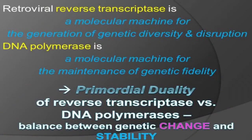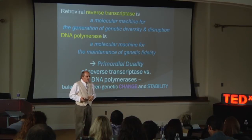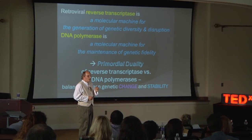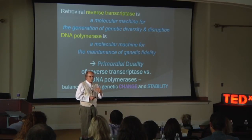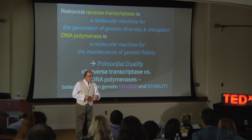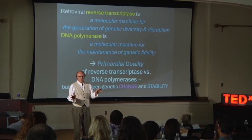The retroviral reverse transcriptase is a type of DNA polymerase that makes DNA from RNA, and it's basically a molecular machine for the generation of genetic diversity and disruption — it disrupts because it inserts that copy somewhere else at random and could disrupt a gene. DNA polymerase, in contrast, is a molecular machine for the maintenance of genetic fidelity, because it has proofreading and is a highly accurate enzyme. This gives rise to a sort of primordial duality, or yin-yang, of reverse transcriptase versus DNA polymerase — a balance between genetic change and genetic stability that's been going on throughout the evolution of life. These retroelements are the remnant of the change side, the dark side.